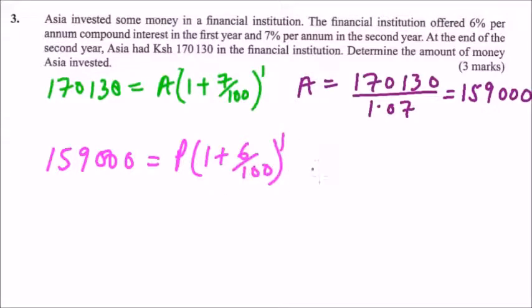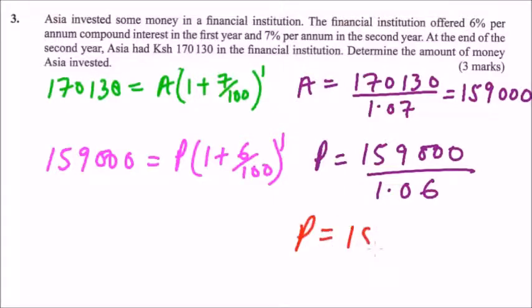Now to get our P, we divide 159,000 by 1.06, so our P is equals to 159,000 divided by 1.06. Using your calculator, when you divide that, you get P is equals to 150,000.